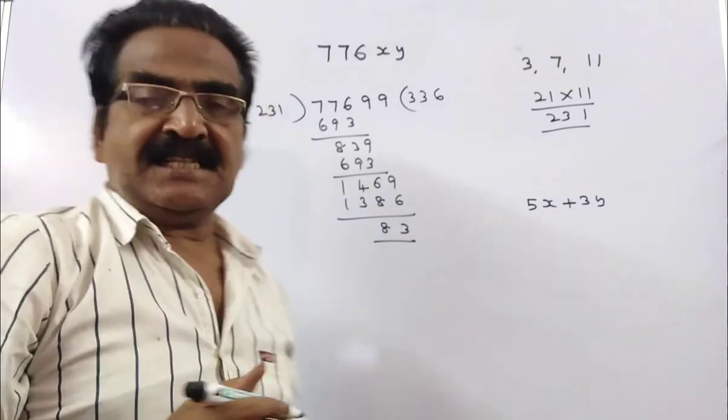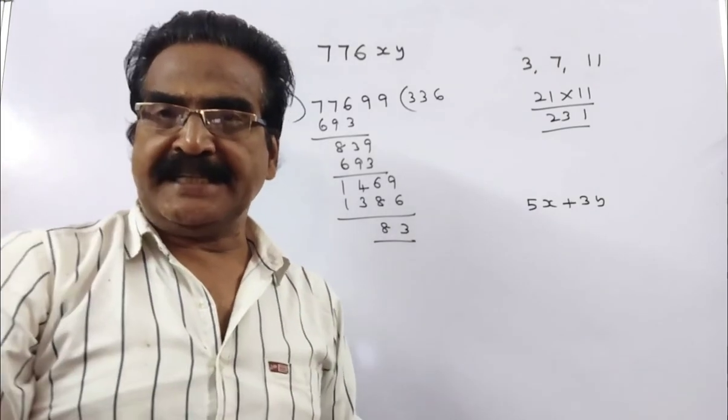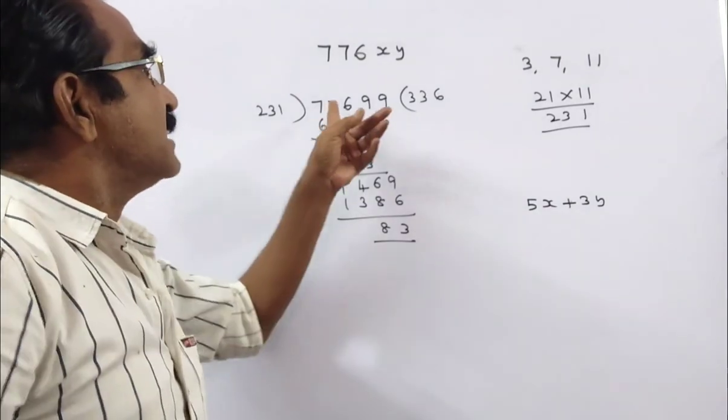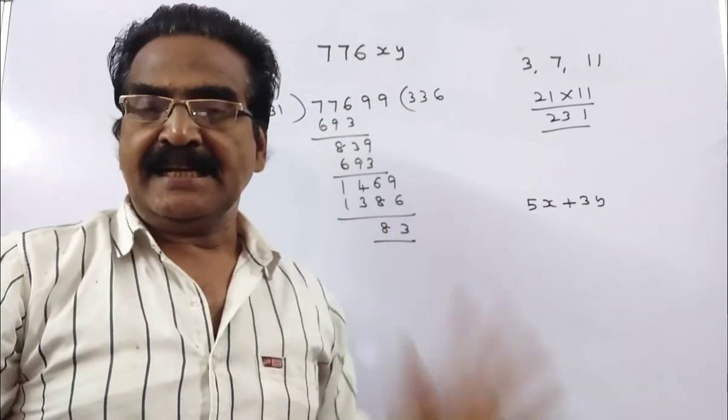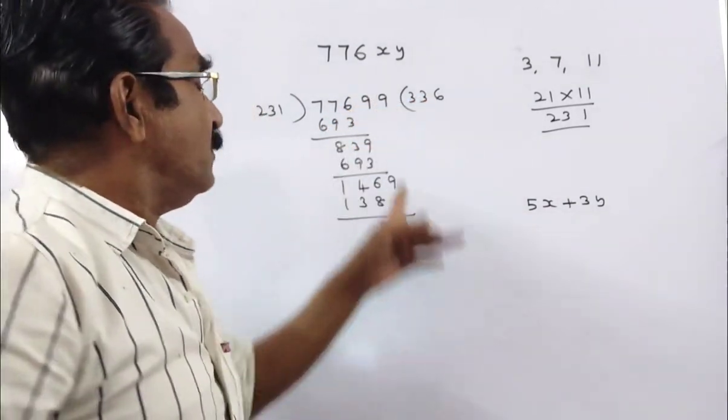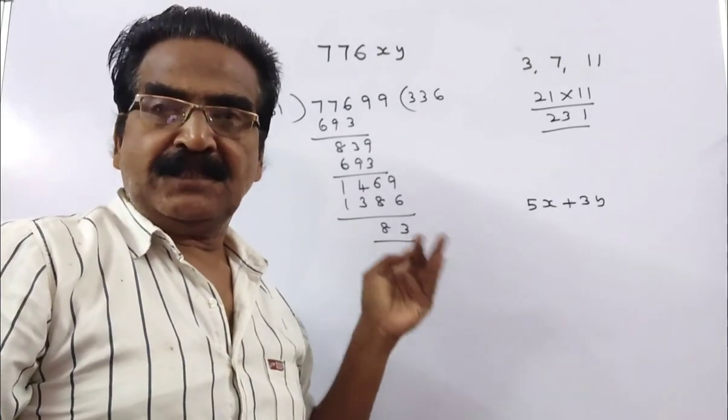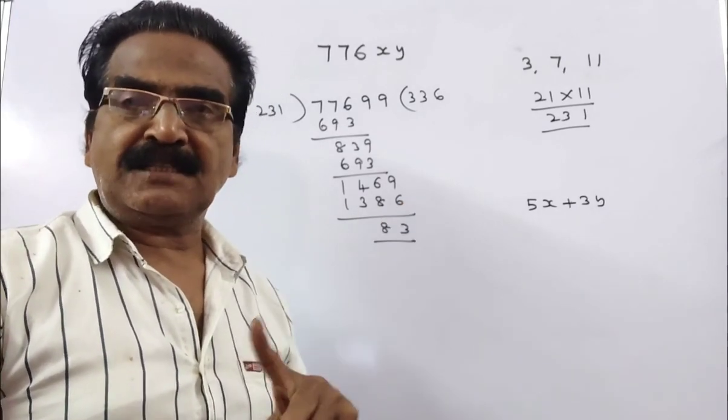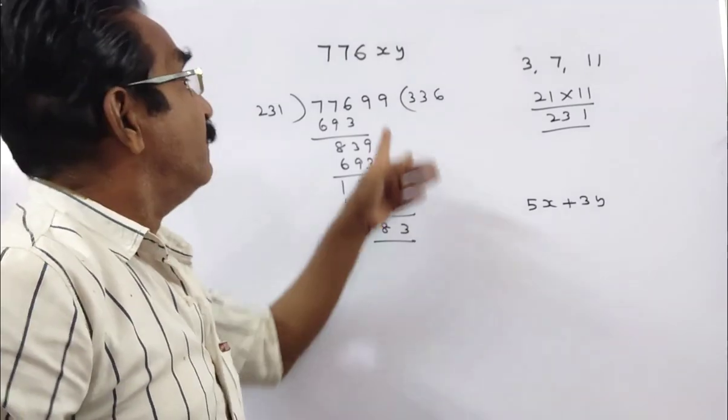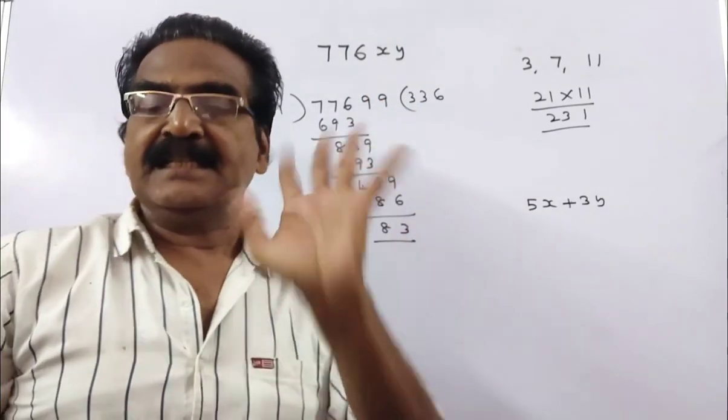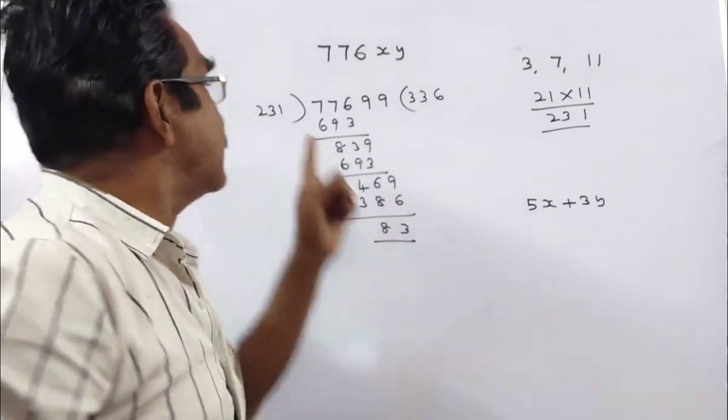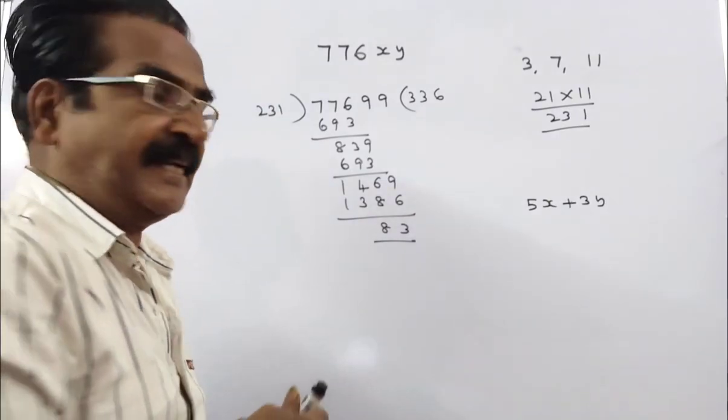So 83 is the remainder. We have started with 77699. So the remainder is 83. You have to subtract this remainder from this number so that the result is exactly divisible by 231.